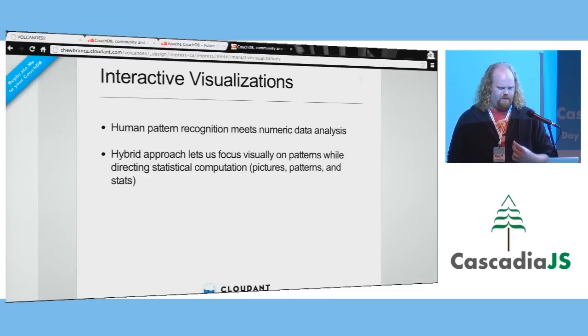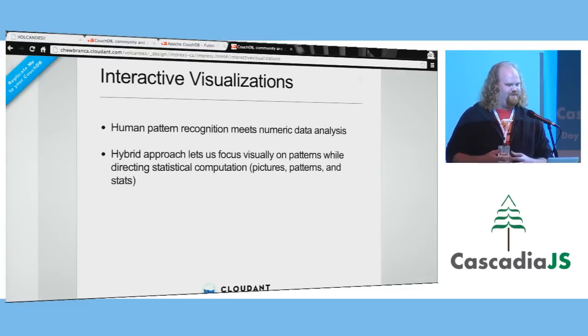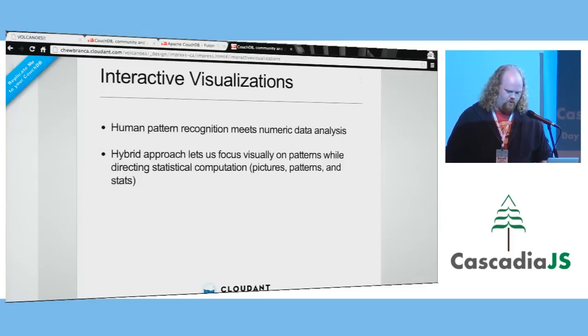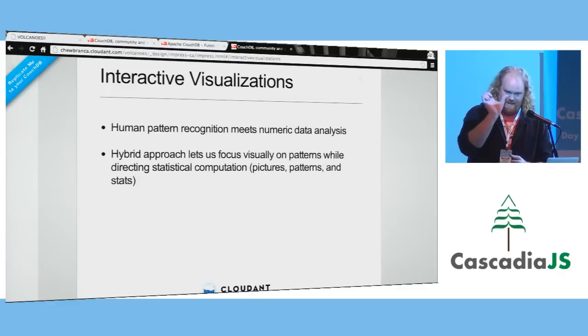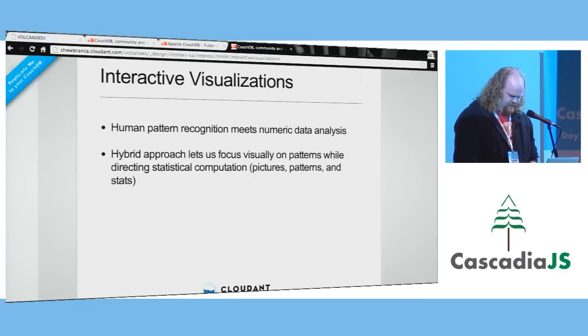I want to talk about what are the core pieces of interactive visualizations and why I think they're interesting. As humans, we're great at pattern matching and pattern recognition — something that computers are getting better at, but it's challenging. So how can we leverage that and also leverage computers' ability to do statistical computations? The core piece of interactive visualizations is that you have the ability for a human to say this bit of data is interesting, drill down into it, get statistics, see relevant pieces, and see how it correlates with other areas.